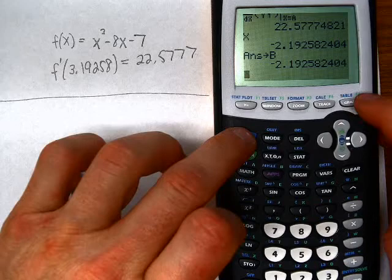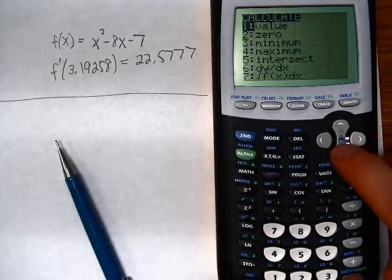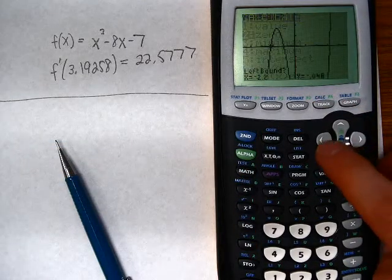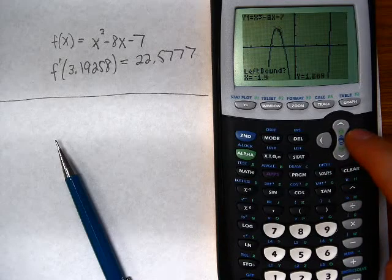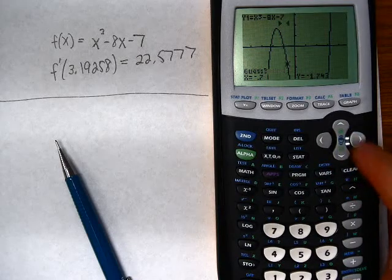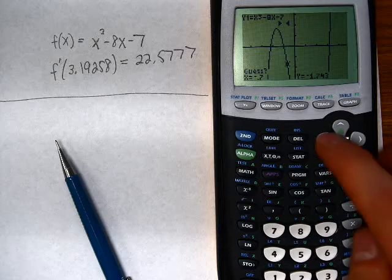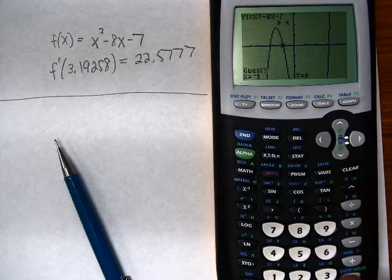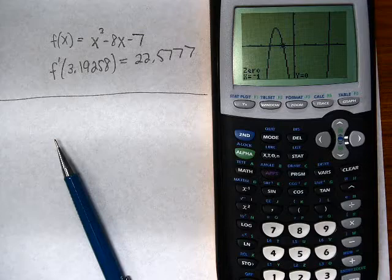So I'm going to go back to the graph. I want to calculate the other x-intercept. I choose my left and right bounds. My guess is there. That one just happens to be negative 1.